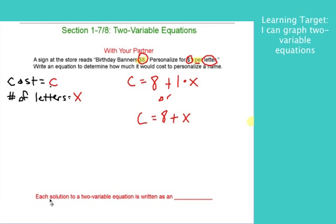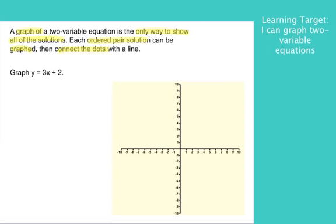Each solution to a two-variable equation is written as an ordered pair. So for the banner problem, I could come up with a bunch of ordered pairs. I could list them out in a table and then graph them and connect the dots. We're going to do that with this Y equals 3X plus 2.